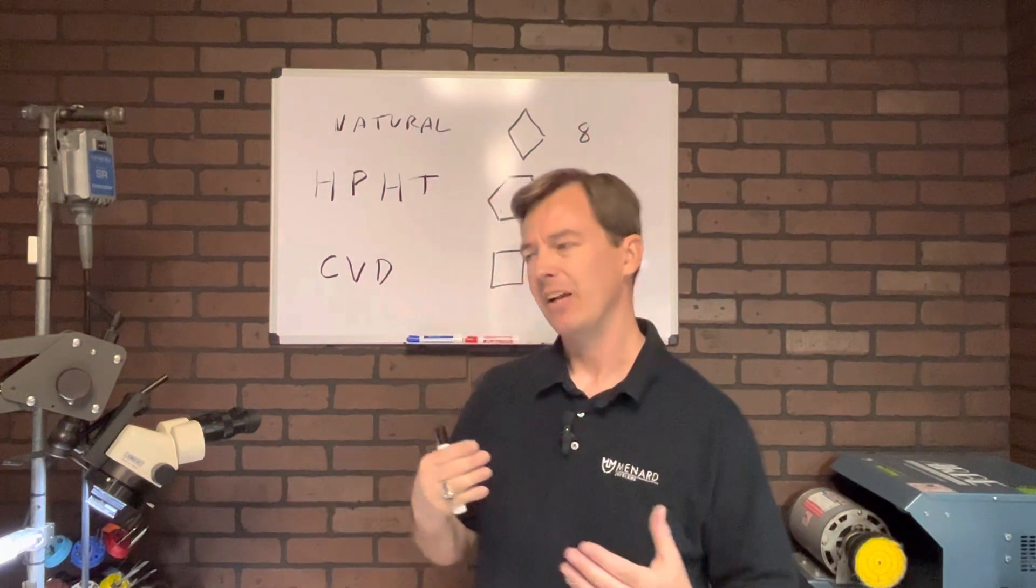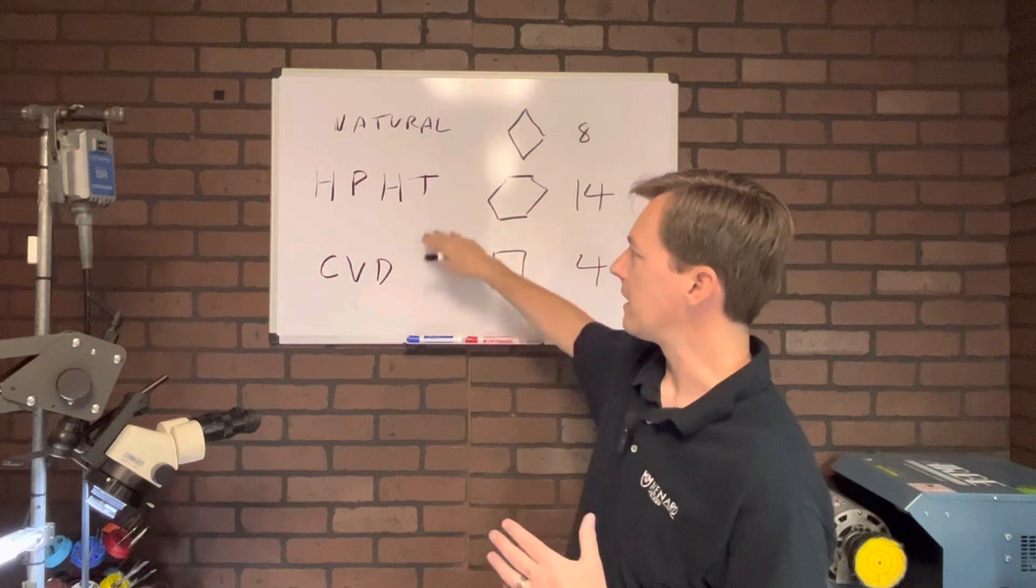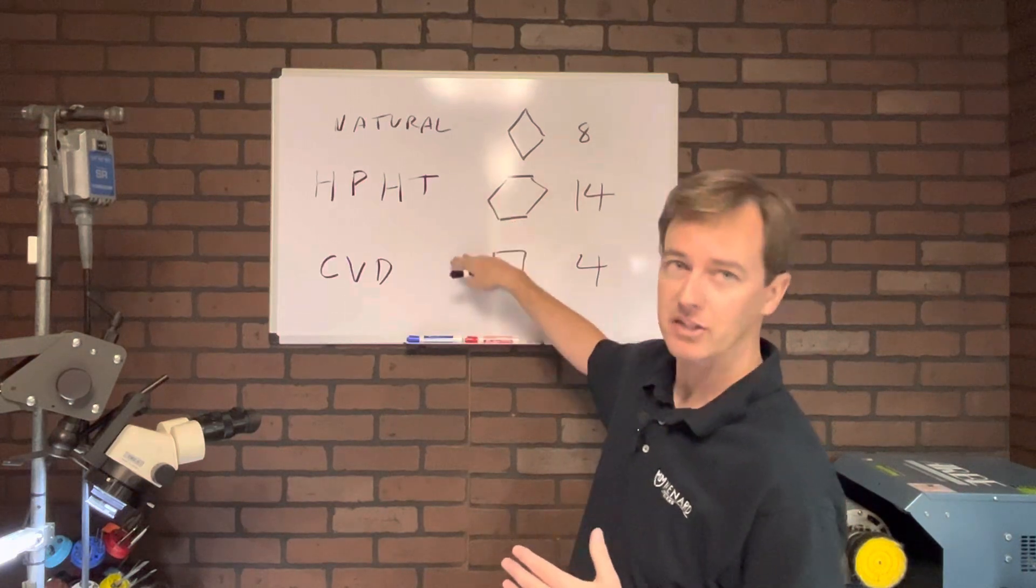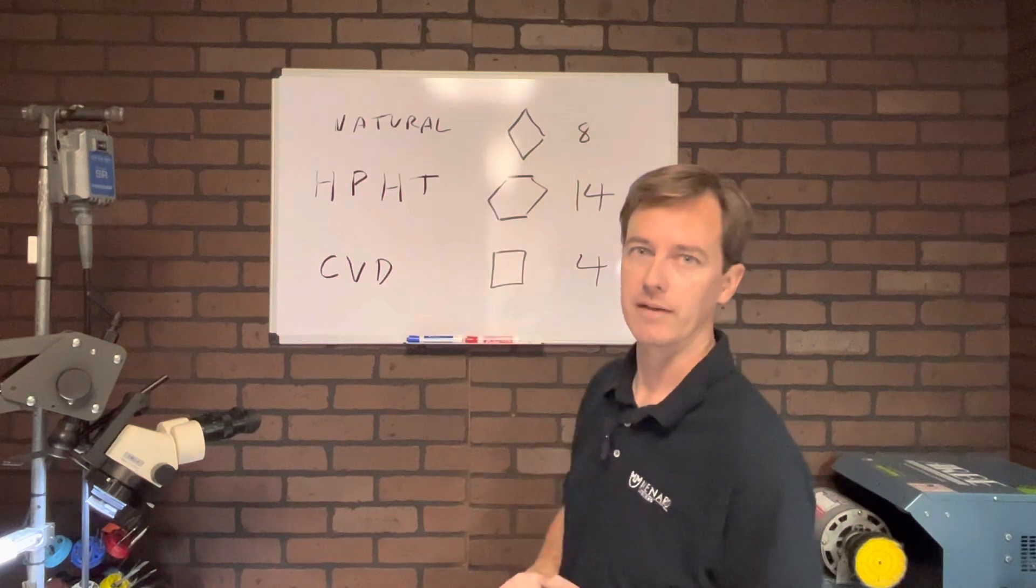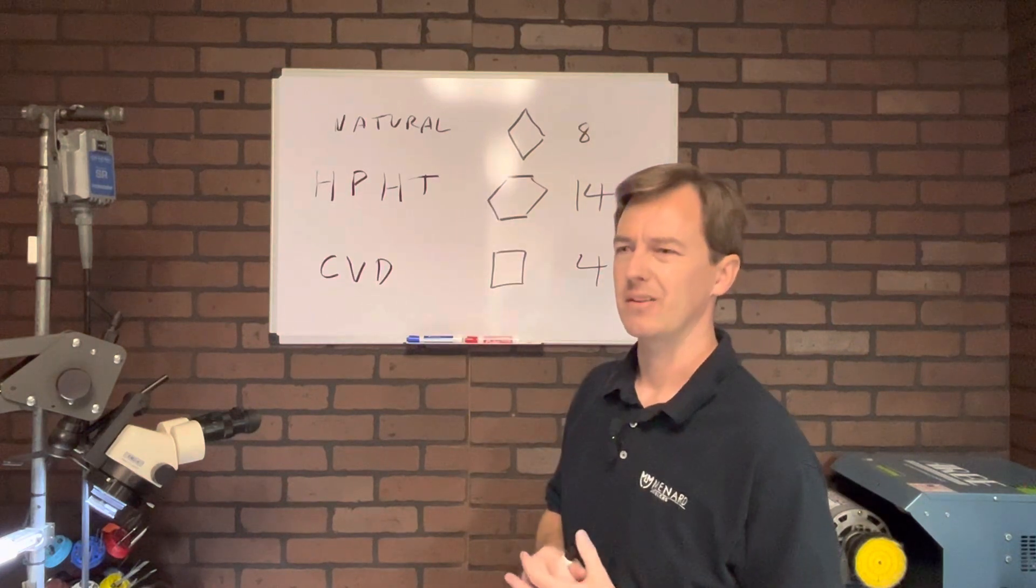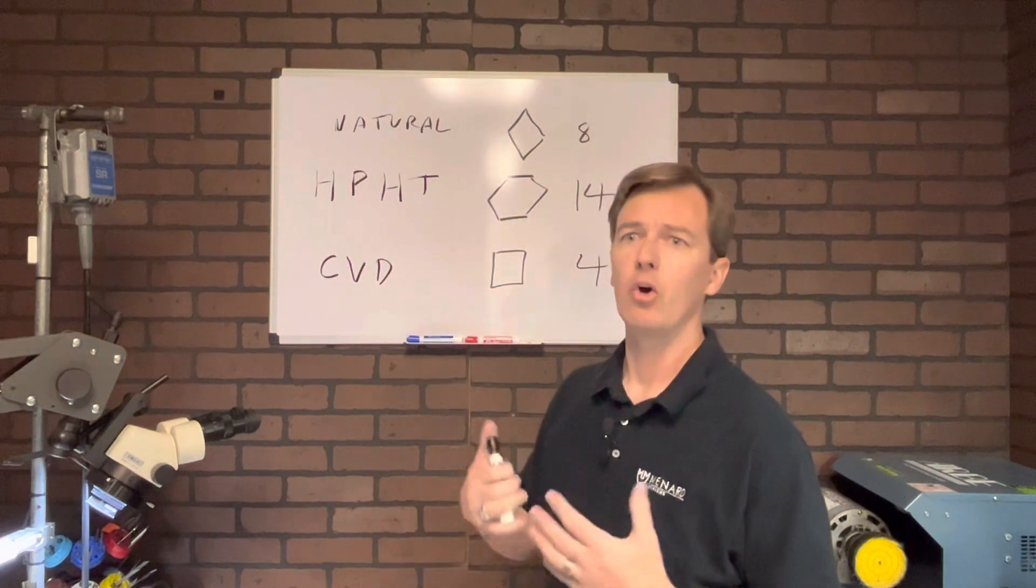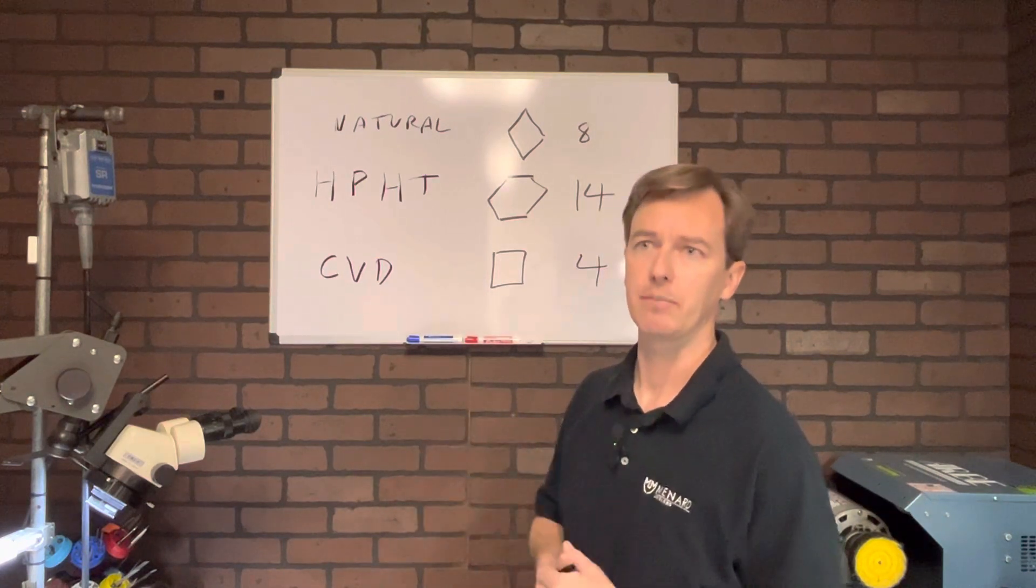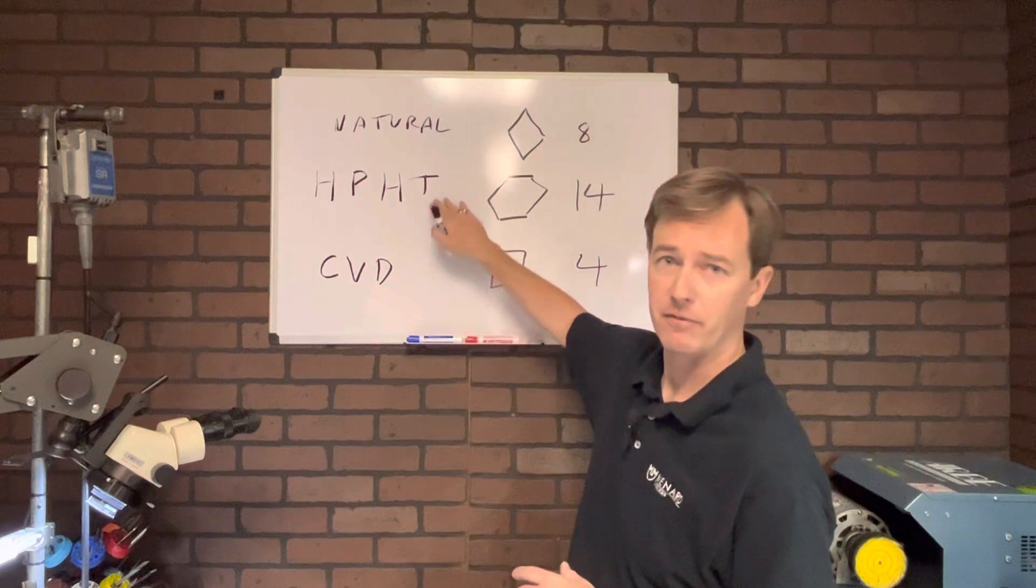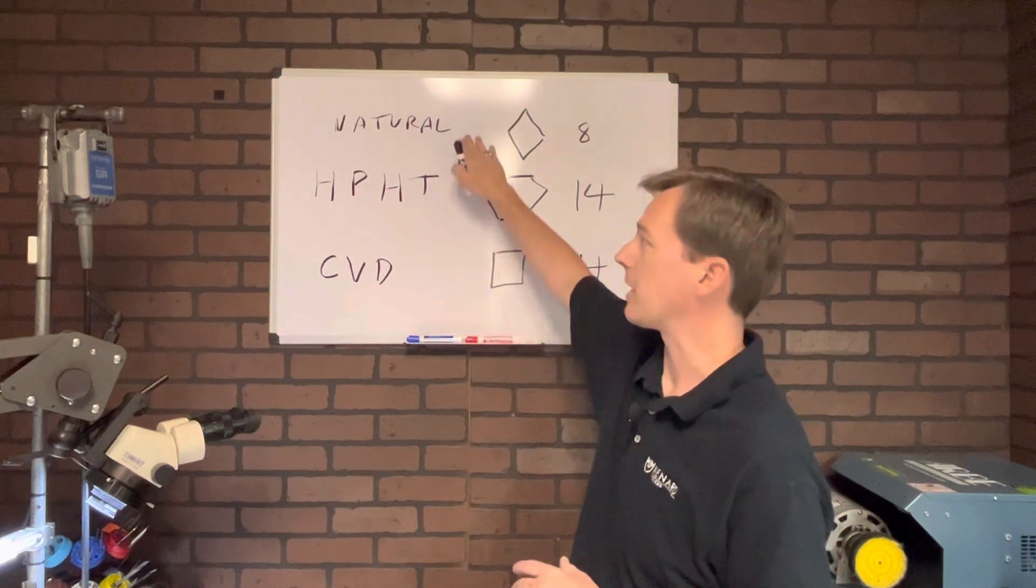And you know, there's not really going to be anything different between these except maybe the way the light shines through them. But again, you're talking on a molecular level, whereas the more important things are going to be who cut the diamond and how well it was cut and how many imperfections, because these can still have imperfections in them, just like a natural one.